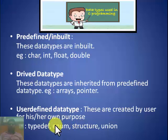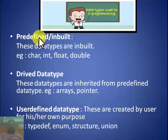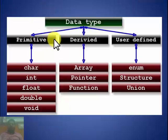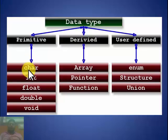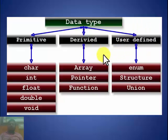We will discuss all of these in the coming videos. To summarize, data types fall into three categories: primitive (predefined) data types — char, int, float, double, void; derived data types — array, pointer, function; and user-defined data types — enum, structure, union. We will be discussing all of these in the coming videos.